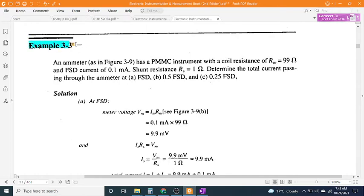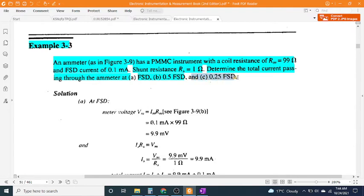Example 3-3: An ammeter, as in Figure 3-9, has a PMMC instrument with a coil resistance of R_M = 99Ω and FSD current of 0.1 mA. Shunt resistance R_S = 1Ω. Determine the total current passing through the ammeter at A) FSD, B) 0.5 FSD, and C) 0.25 FSD.